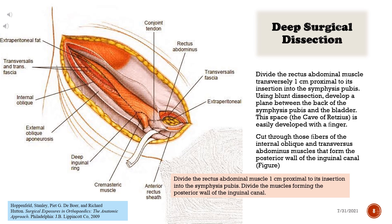Deep surgical dissection: Divide the rectus abdominal muscle transversely one centimeter proximal to its insertion into the symphysis pubis. Using blunt dissection, develop a plane between the back of the symphysis pubis and the bladder. This space — the cave of Retzius — is easily developed with a finger. Cut through those fibers of the internal oblique and transversus abdominus muscles that form the posterior wall of the inguinal canal.